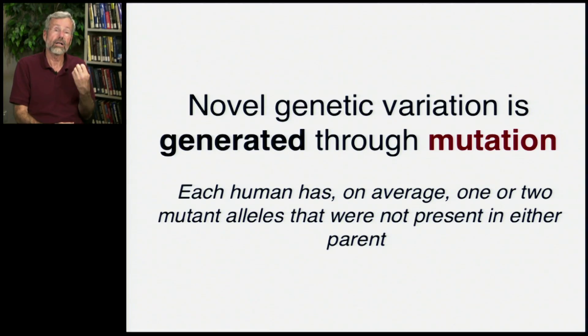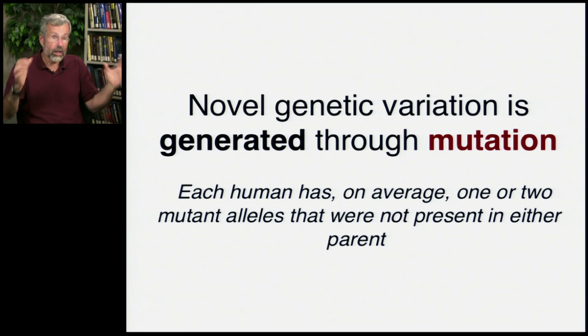So ultimately, novel genetic variation is generated through mutation. That's where all new gene forms come from. And our genome, three billion haploid base pairs, six billion base pairs, is very, very long. And even though DNA replication is extremely accurate, it's not perfect. So on average, each one of us has one or two mutant alleles that were not present in either of our parents. So we are obtaining still new mutations that we will then likely pass on to our own offspring.